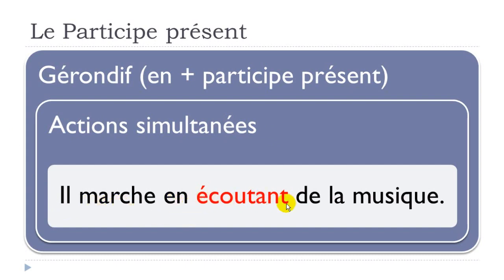For example: 'il marche en écoutant de la musique' — he is walking while listening to music. The 'en' plus the participe présent form 'écoutant' indicates both actions happen at the same time. That's the first use of this gérondif form.